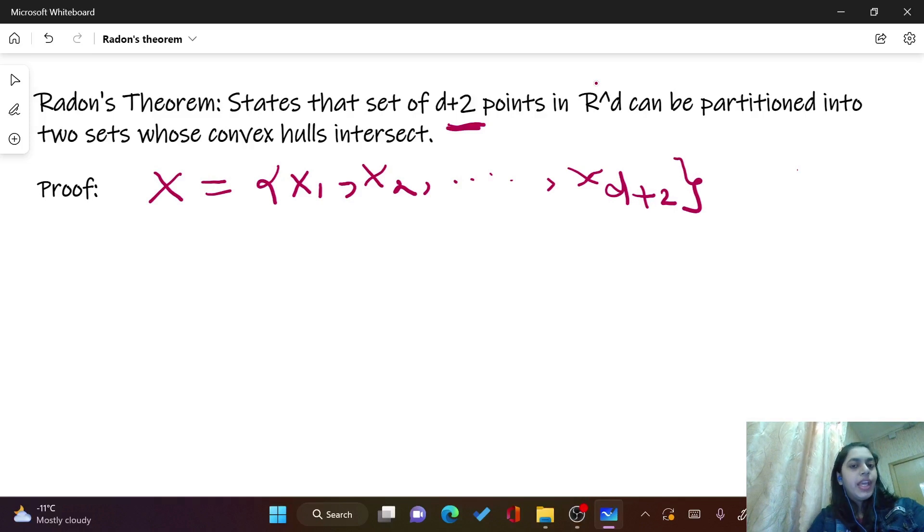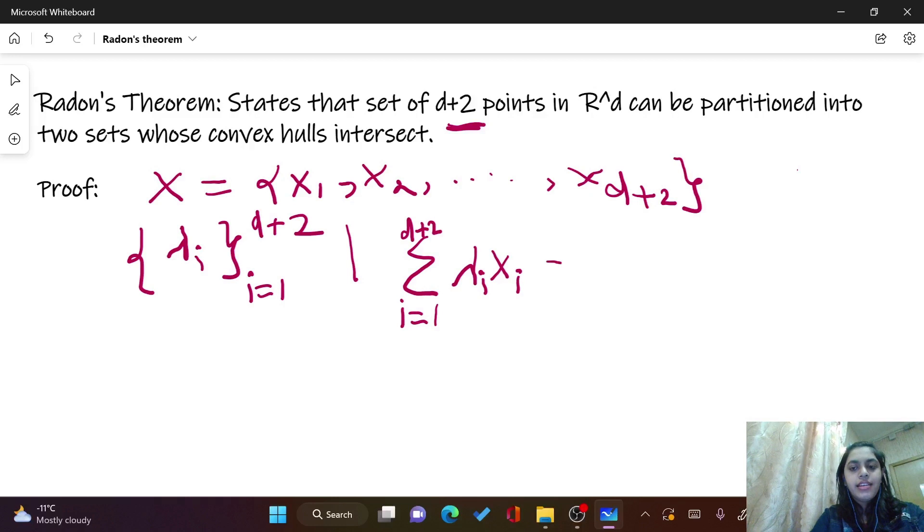Now let's consider scalar multipliers for each of the points. Since points are d+2, let's take a scalar multiplier lambda_i which goes from i equals 1 to d+2, such that the summation from i equals 1 to d+2 of lambda_i times x_i is equal to zero.